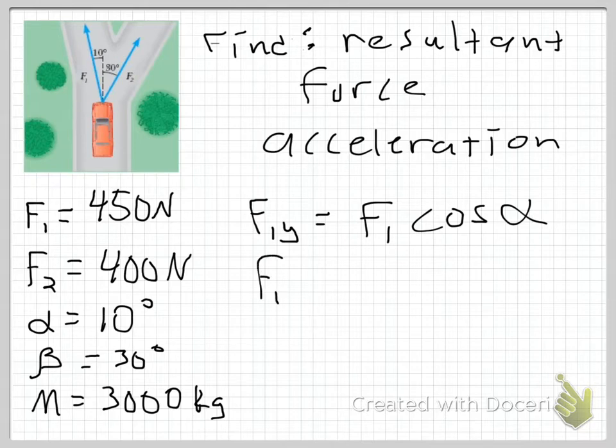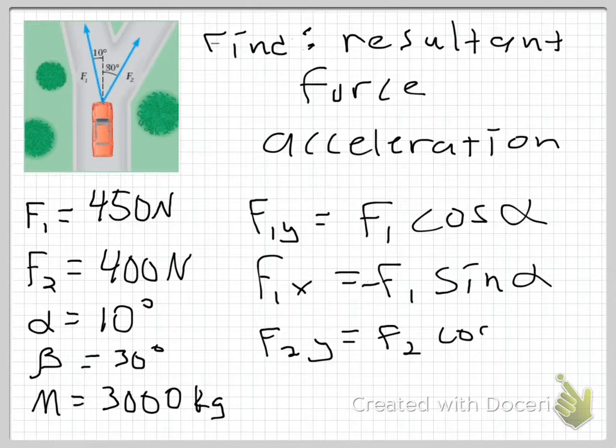So F1x is equal to, now this is going to be negative because the component is directed to the left, negative F1 sine alpha. I can do the same thing on F2. Notice these are both positive quantities. So F2y is going to be F2 cosine of beta, and F2x is going to be F2 sine of beta.